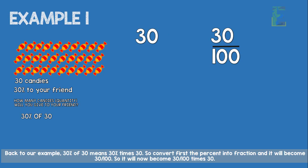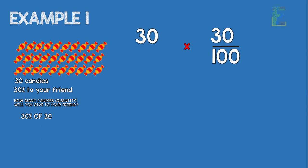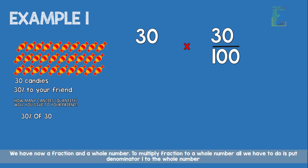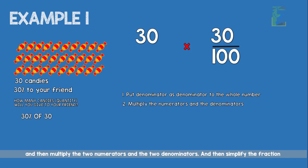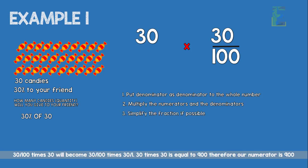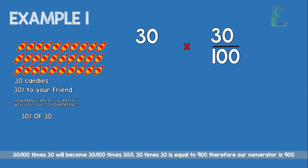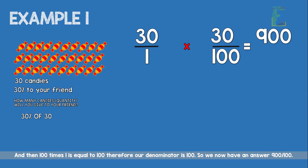So it will now become 30 over 100 times 30. We have a fraction and a whole number. To multiply a fraction by a whole number, put denominator 1 under the whole number, then multiply the two numerators and the two denominators and simplify. So 30 over 100 times 30 becomes 30 over 100 times 30 over 1. 30 times 30 equals 900, so our numerator is 900. 100 times 1 equals 100, so our denominator is 100. We now have 900 over 100.